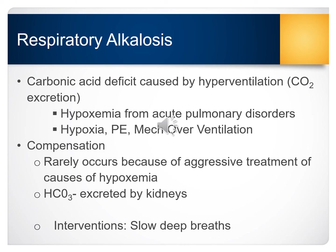Respiratory alkalosis typically occurs with hyperventilation, so the patient is having excessive CO2 excretion. This often occurs with prolonged hypoxemia, which can happen from acute pulmonary disorders, hypoxia, a pulmonary embolism, or a patient on a ventilator experiencing mechanical overventilation. Typically with respiratory alkalosis, compensation doesn't occur because the patient is hypoxic or hypoxemic, so there is aggressive treatment to reverse the effects. The kidneys will begin to excrete bicarbonate.